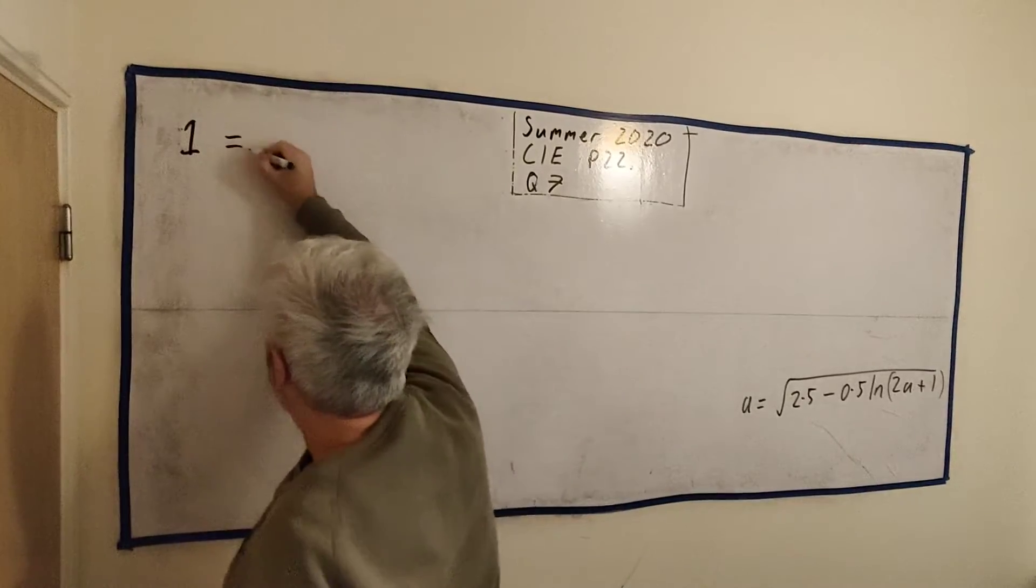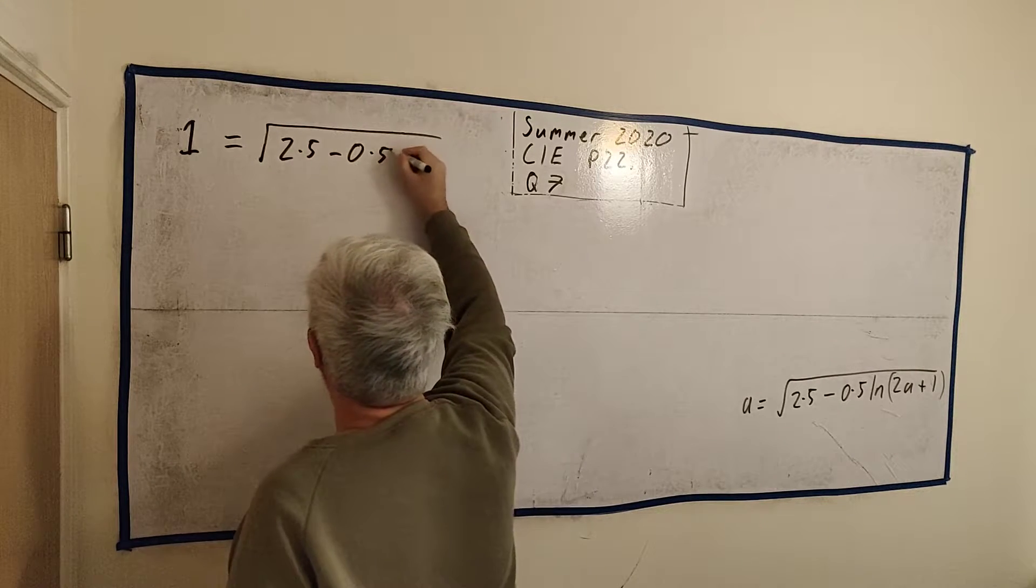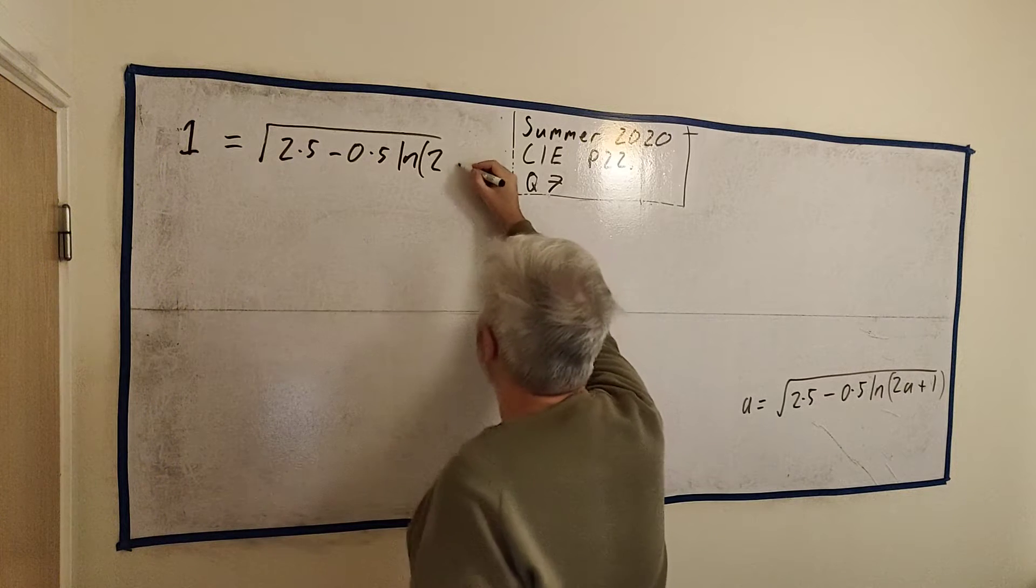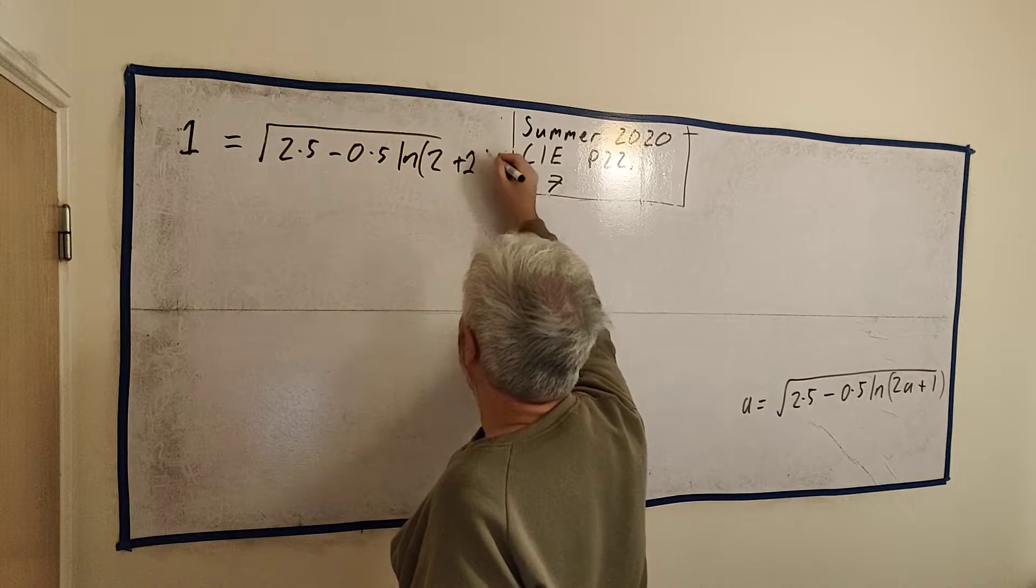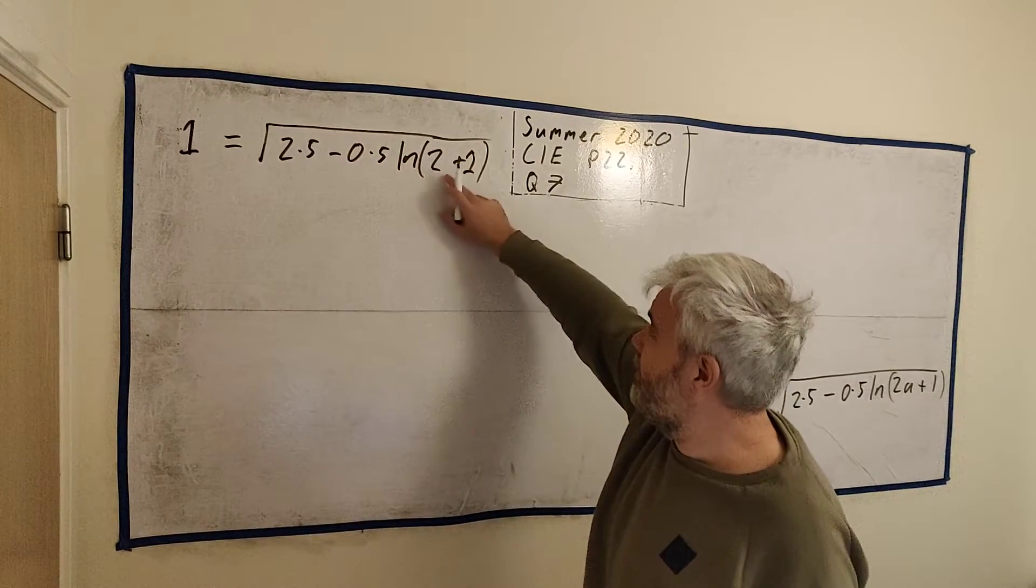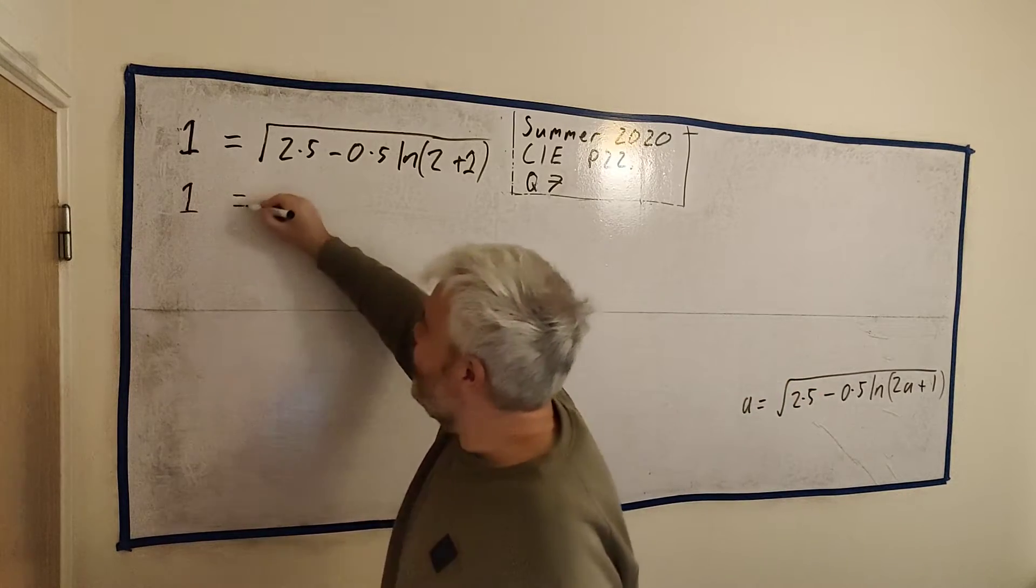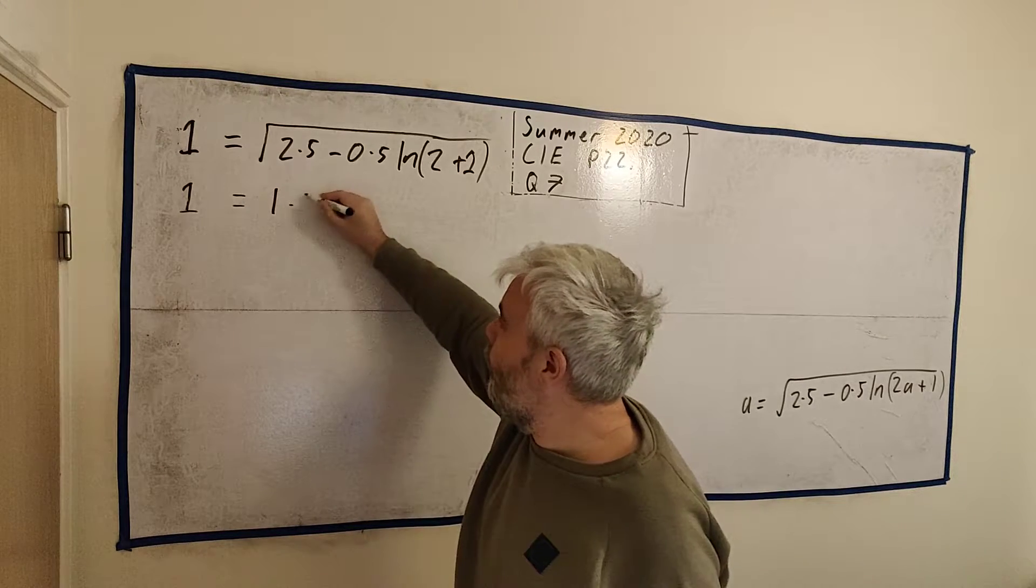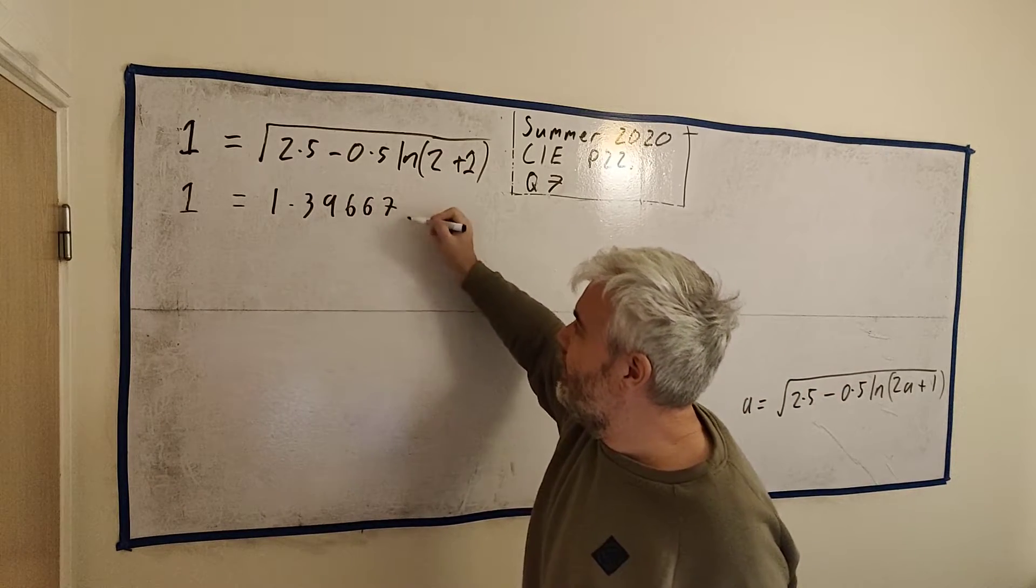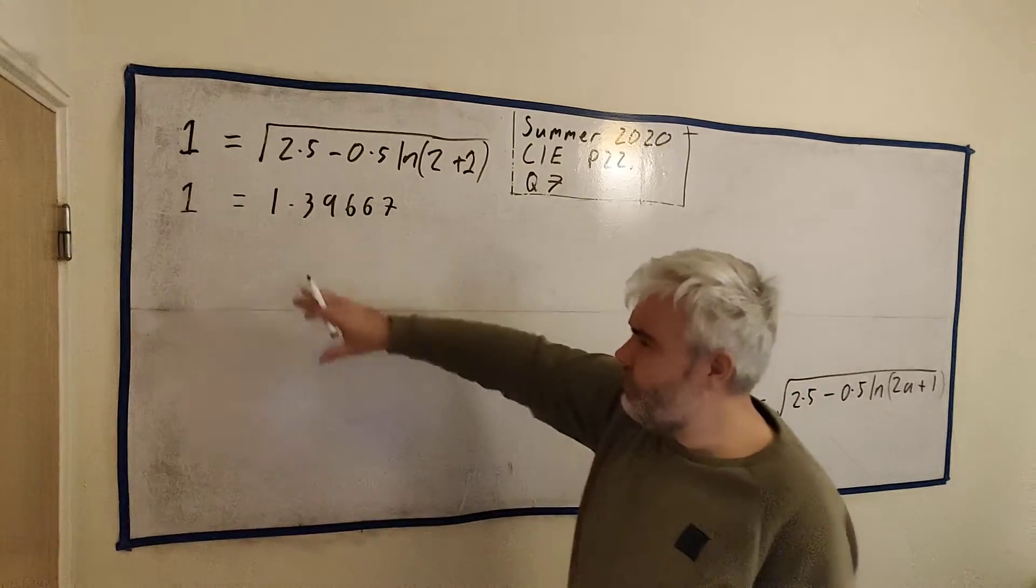Here's how we do it. They're saying a is between 1 and 2. How do we show that? Well, let's just pretend a is 1. So a equals 1. So we put 1 in for a. And that's equal to the square root of 2.5 minus 0.5 the natural log of 2 multiplied by 1, which is 2 plus 1. And we just put this into a calculator. We get 1 is equal to 1.394667.